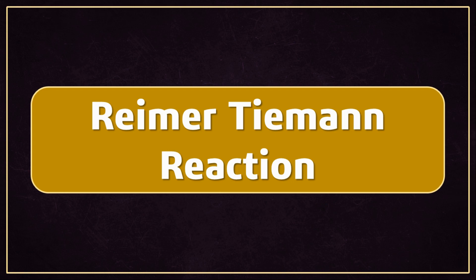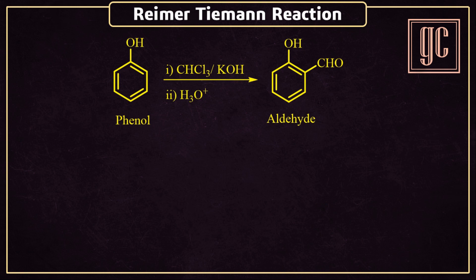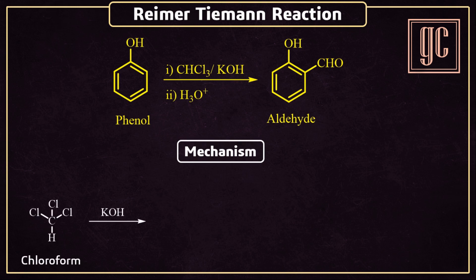In this video we are going to discuss the Reimer-Tiemann reaction. This is a formylation reaction in which phenols react with chloroform and give ortho-substituted aldehydes. This reaction proceeds in strong basic conditions, and formation of carbene as an intermediate takes place. Now we are going to discuss the mechanism of this reaction.